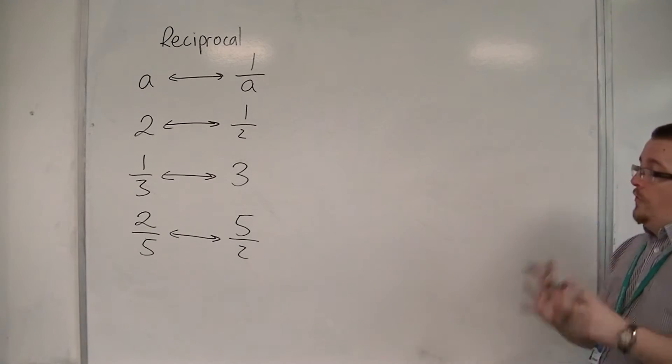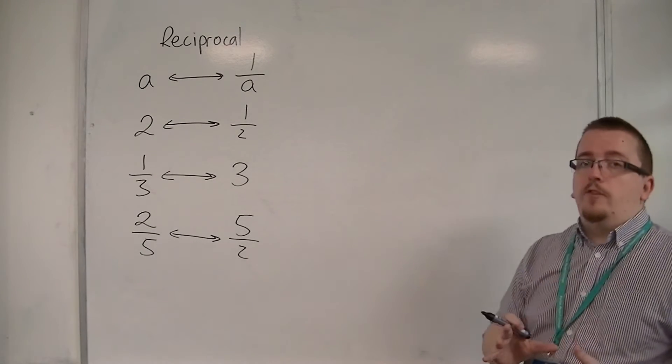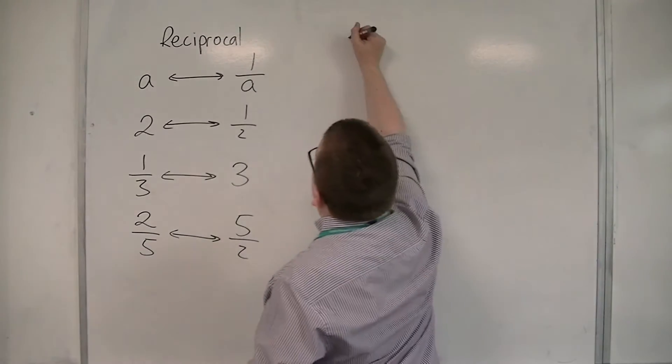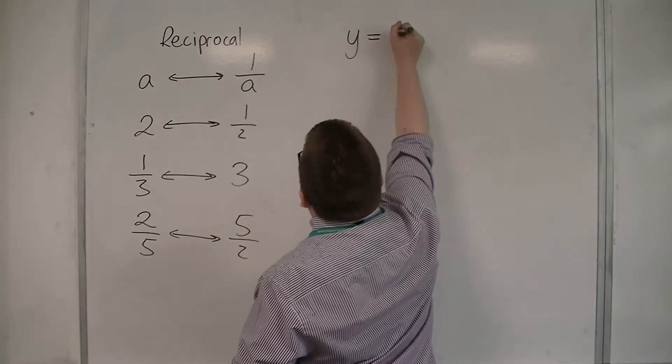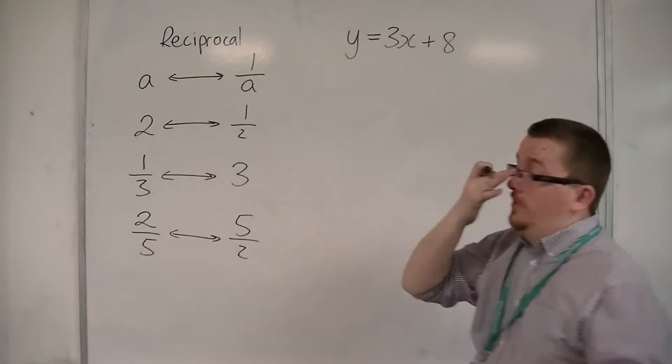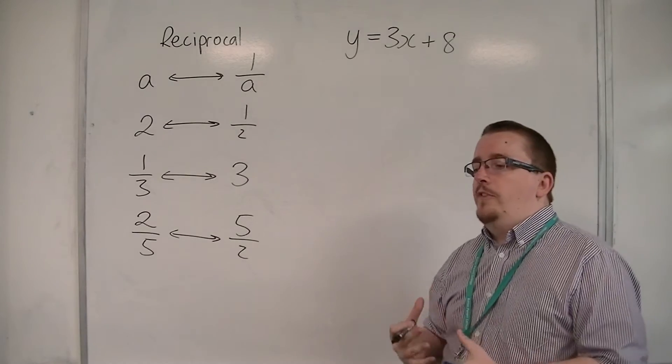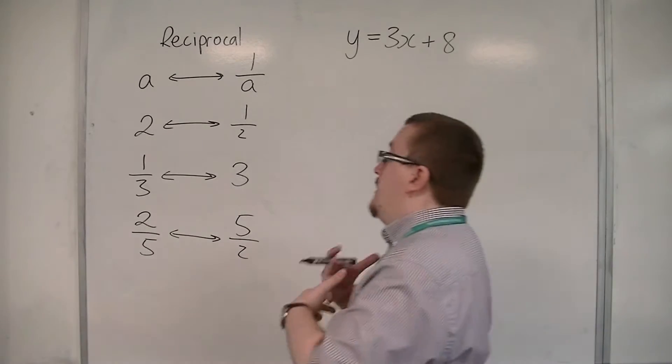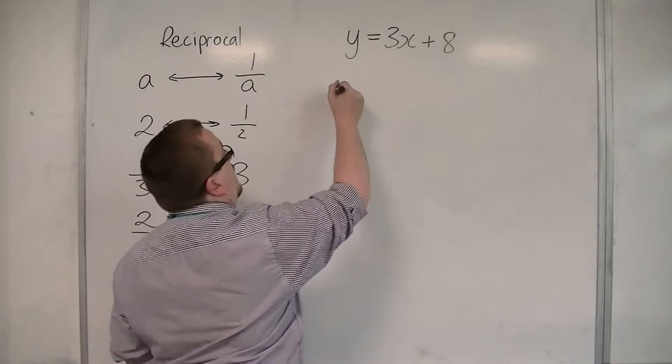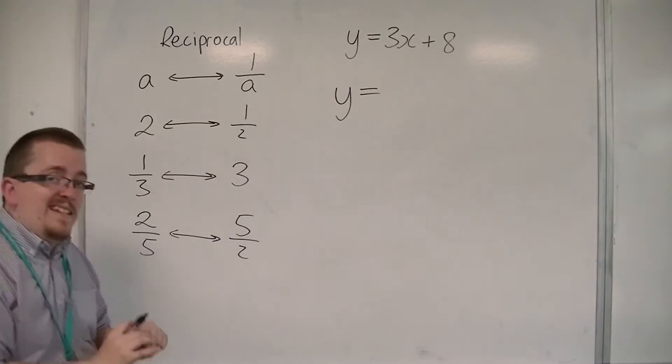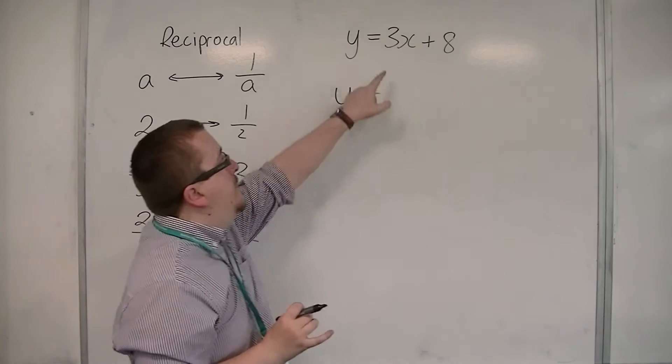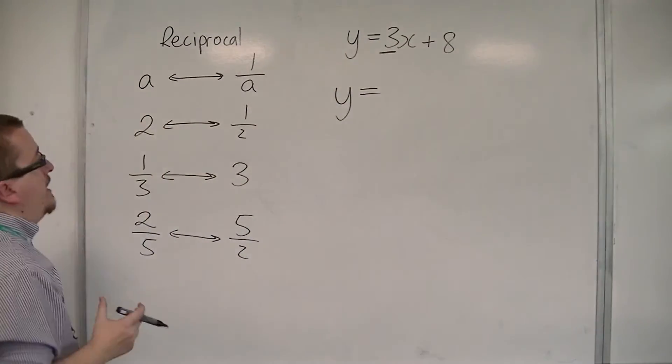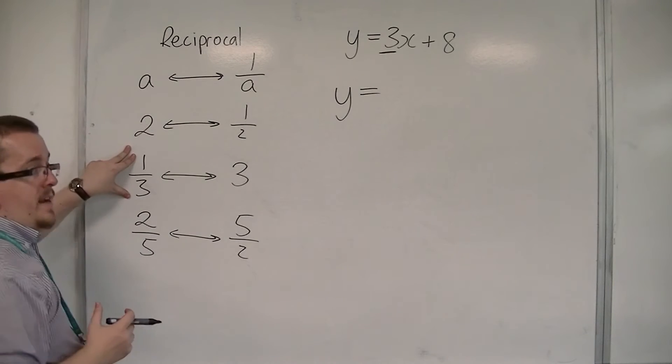Now we need the reciprocal when we're looking for a gradient of a perpendicular line. And so, if I was looking at y is equal to 3x plus 8, for example, and I wanted to write down a line that was perpendicular to it, then what I need to do is write down a line that has a gradient that is the negative reciprocal of 3. So the negative reciprocal of 3 is minus 1 third.